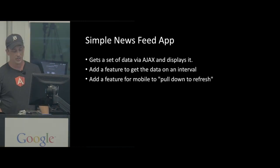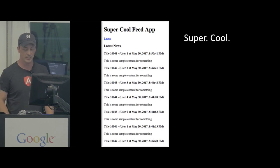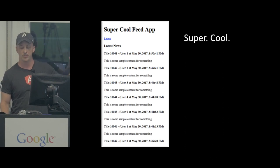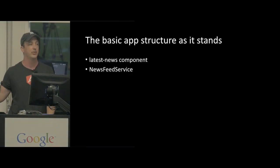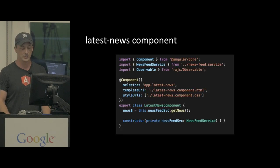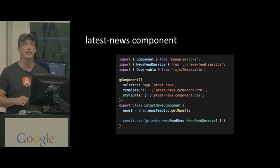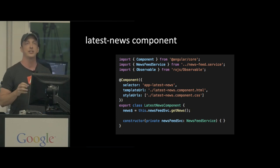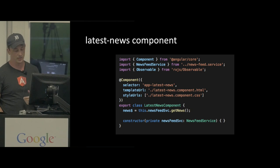Here is my really super cool feed app - it uses Times New Roman. It's just a title across the top and a straight-up list. The basic app structure has a latest news component and a news feed service. The latest news component has a news property making a call to get our news observable from the news service, which is injected in the constructor.